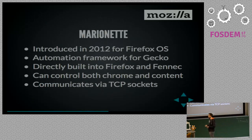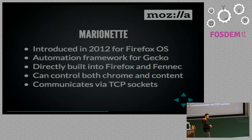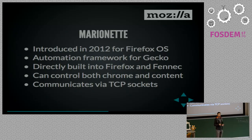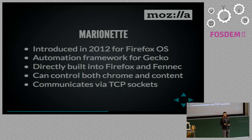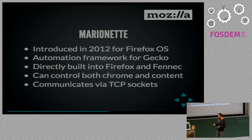Marionette was first introduced in 2012 for the Firefox OS project, which was an operating system for mobile devices. It is an automation framework for Gecko-based applications. Last time I was at FOSDEM, Henrik and I gave a talk about automating Firefox OS using Marionette. It's now directly built into Firefox and Fennec — our Android version of Firefox. It can control both Chrome and content space: Selenium is typically for interacting with content space, i.e., web applications, but Marionette can escape that into Chrome — your tab bar, URL bar, buttons, etc. The method of communication is TCP sockets.